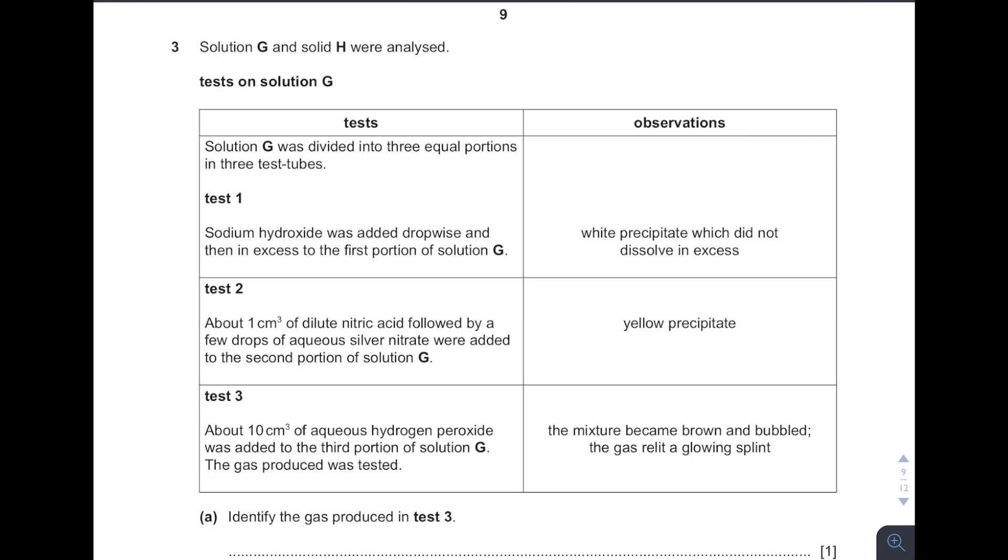Identifications of ions and gases. See, sodium hydroxide added. White precipitate formed and it did not dissolve in excess. It remains insoluble in excess. So from you know that it is calcium. And then you see it's titrated with silver. Remember when you see silver, 100% they are testing for halide. It forms yellow precipitate. Indicates the presence of iodine ions.